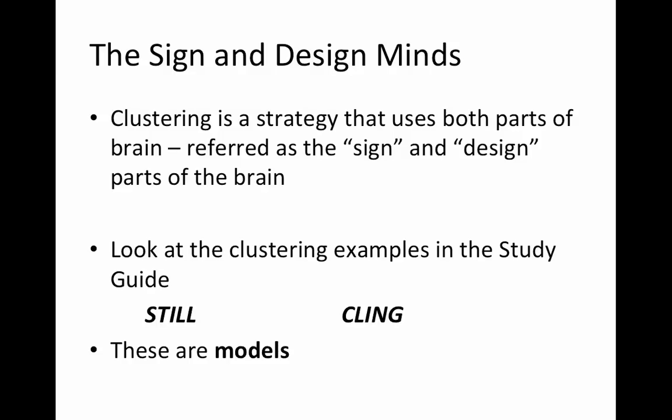The study guide goes into the theory of clustering and defines it in terms of what it calls our 'sign mind' and our 'design mind.' So instead of saying left brain or right brain, or creative versus structured, it uses 'sign' and 'design' to refer to different parts of the brain. The design mind is the creative part, and the sign mind is the logical part — it's just different terminology for the same concept.